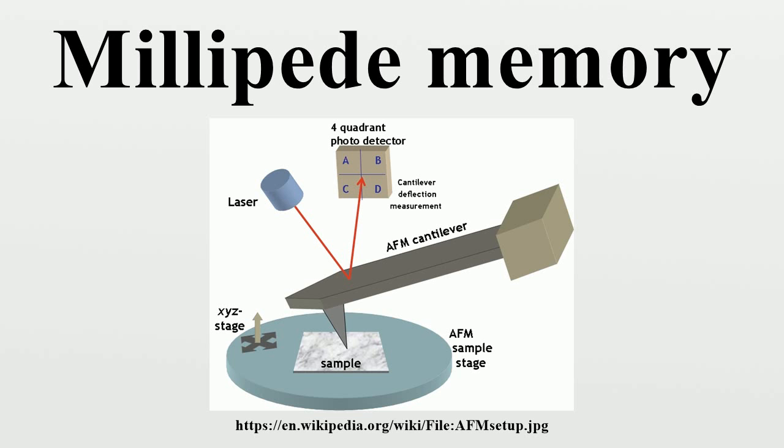IBM initially demonstrated this device in 2003, planning to introduce it commercially in 2005. By that point hard drives were approaching 150 gigabits per square inch, and have since surpassed it.